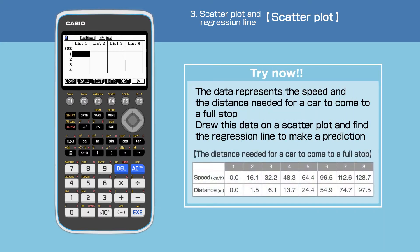Let's look at the example question for this video. The data represents the speed and the distance needed for a car to come to a full stop. Draw this data on a scatter plot and find the regression line to make a prediction.